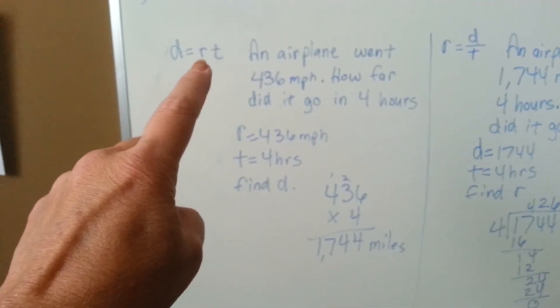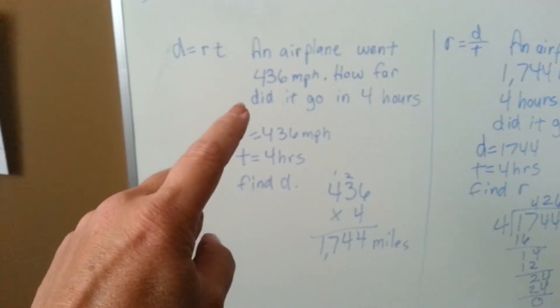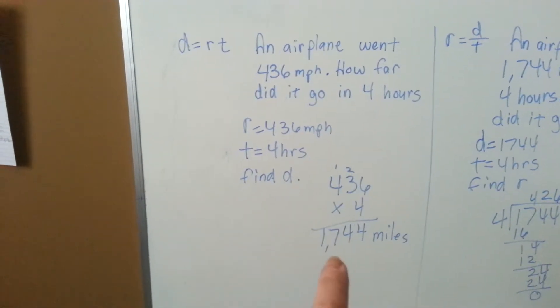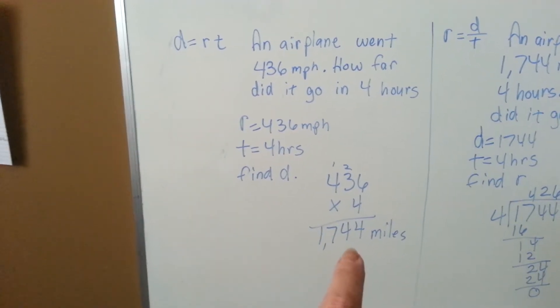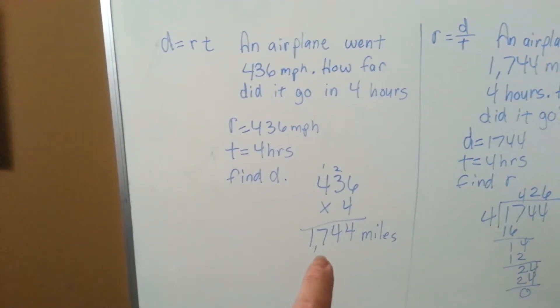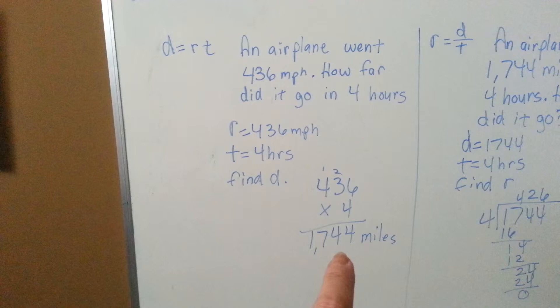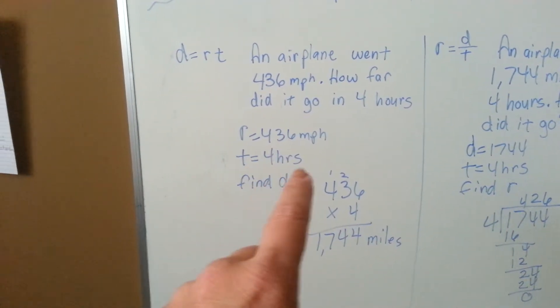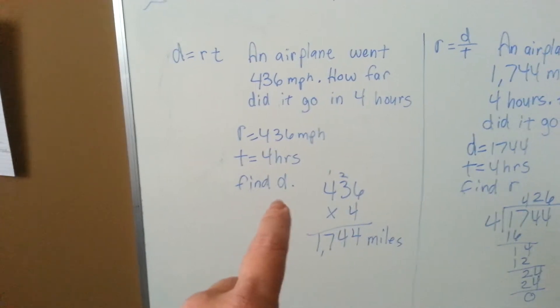That would be the distance equals the rate times the time. We're going to multiply the rate times the time it took to come up with the distance, the miles, which would be 1744. We know the rate is how fast it was going, the time is how long it took, and they want you to find D.